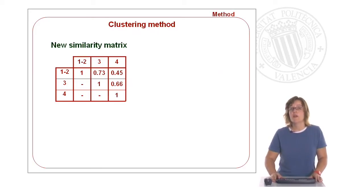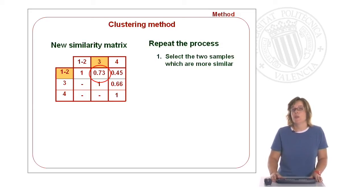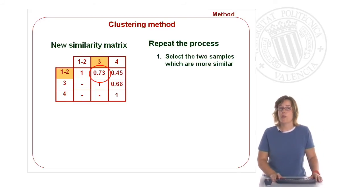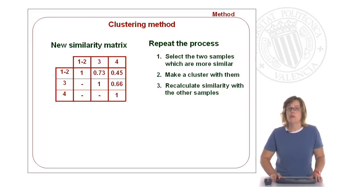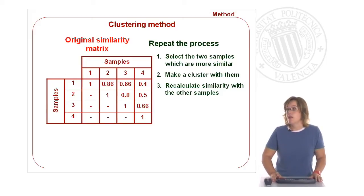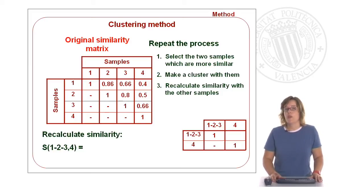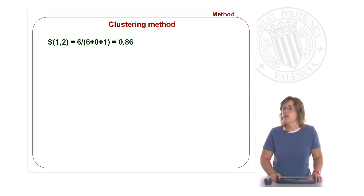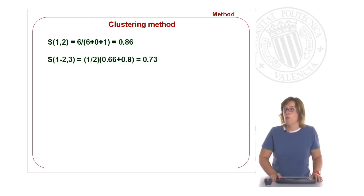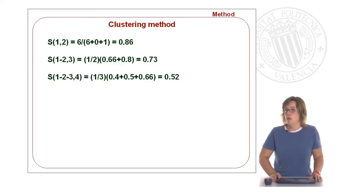This gives us our new similarity matrix. We continue the process by selecting again the two most similar entries, which is now group 1–2 and sample three. We make a new group, 1–2–3, and recalculate the similarity with the remaining samples. To do this we go back to the original similarity matrix — the similarity between group 1–2–3 and sample four is the average of similarities: one–four, two–four, and three–four. Now we have all our samples grouped: group 1–2 with a similarity value of 0.86, group 1–2 with sample three, and group 1–2–3 with sample four.